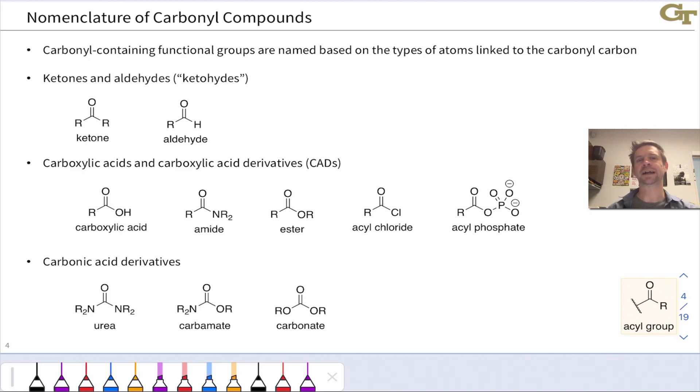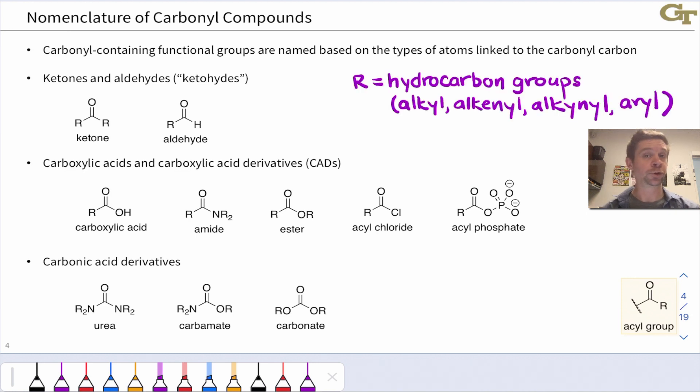Ketones and aldehydes, what I collectively call the ketohydes, contain R groups or hydrogens linked to the carbonyl carbon. Here R is meant to refer to a hydrocarbon group - this could be alkyl, alkenyl, alkynyl, or aryl. The difference between a ketone and an aldehyde is that the aldehyde has one or two hydrogens linked to the carbonyl carbon.